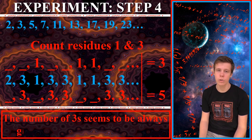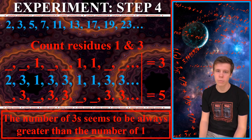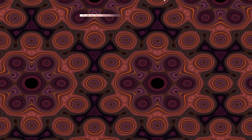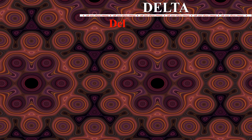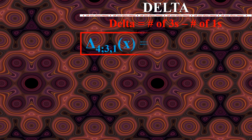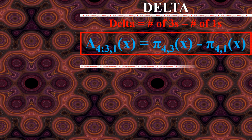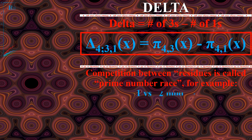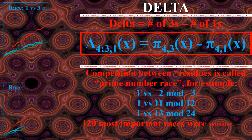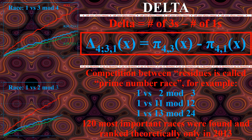In our simple case, we have 3 ones and 5 threes. This is the essence of Chebyshev's bias — the number of 3s seems to be almost always greater than the number of 1s. The difference in the number of 3s and 1s is called delta. Delta almost never becomes negative. It also has its own special notation. The competition between 3s and 1s is often called a prime number race. These races also exist for other moduli and residues.